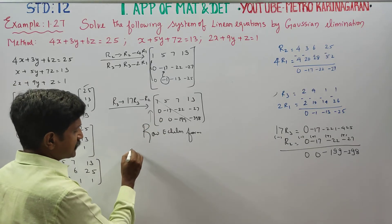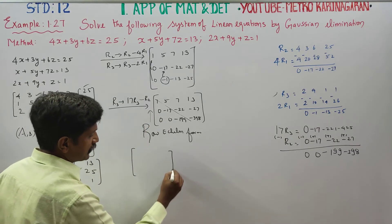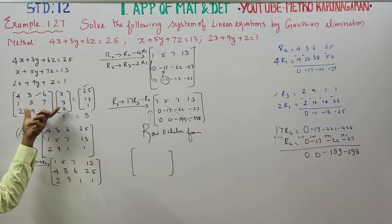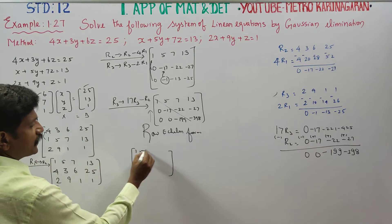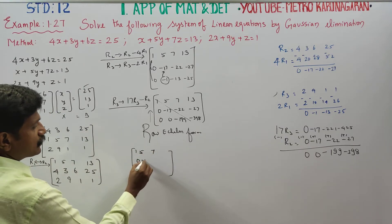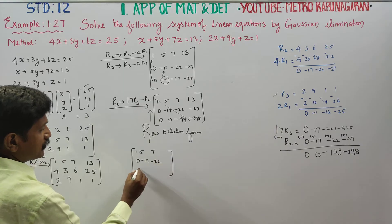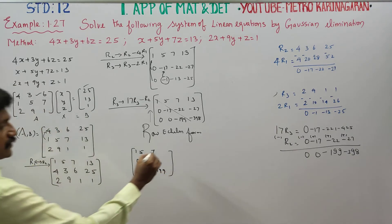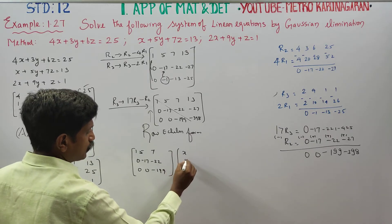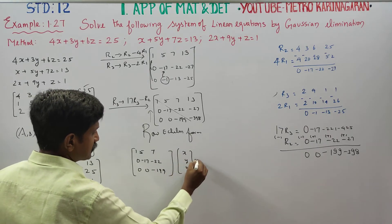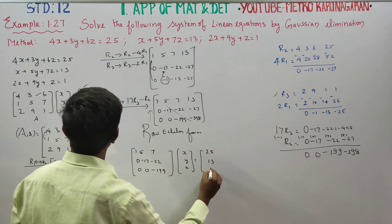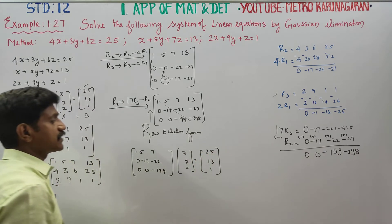Back substitution method you can find the values of x, y, and z. Back substitution is 1, 5, 7, 0, minus 17, minus 22, and 0, 0, minus 199 in the style.